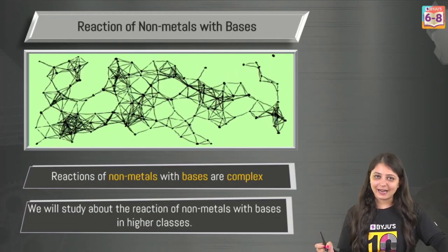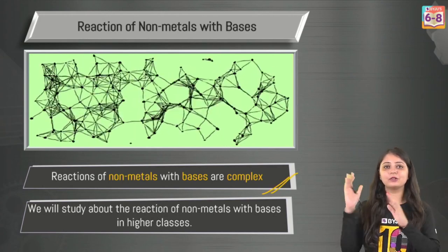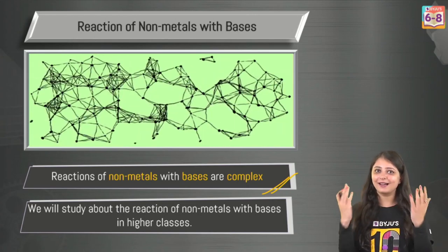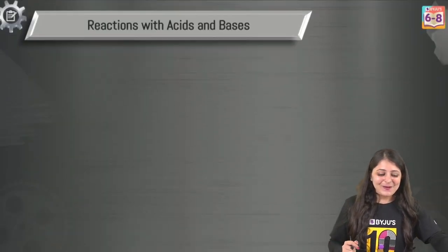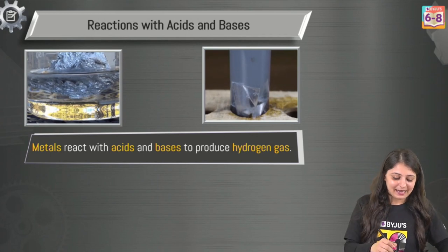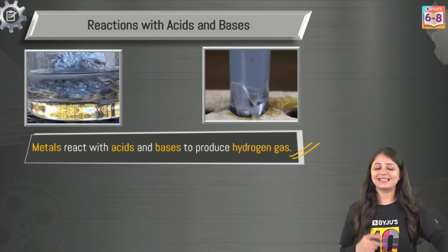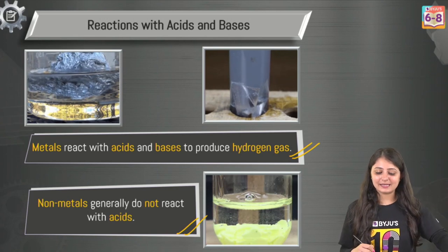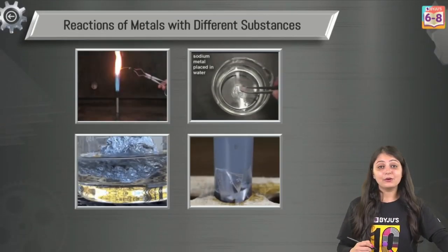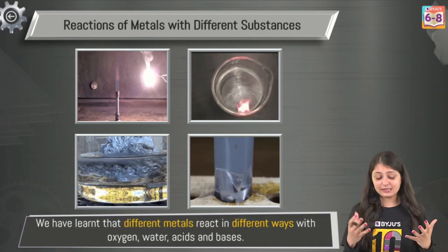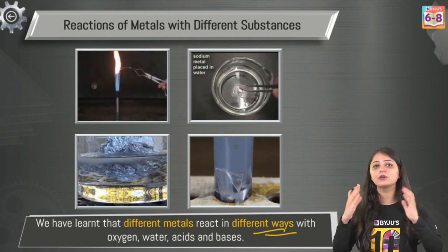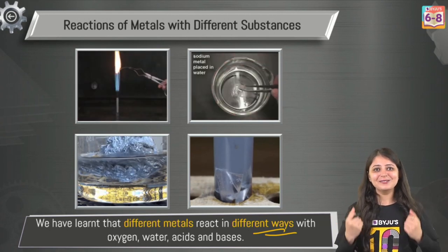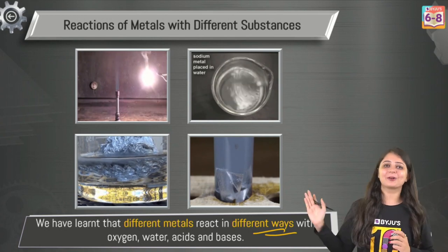Coming to non-metals — how are non-metals reacting with bases? It seems pretty complex and we'll study this in higher classes. To summarize: metals can react with acids and bases to give hydrogen gas, which we check using the pop sound test. Non-metals generally do not react with acids. Different metals react in different ways with oxygen, water, acids and bases — every metal and non-metal is unique in its own way.